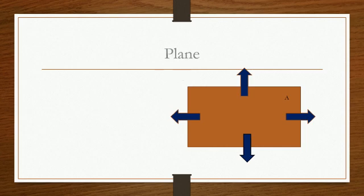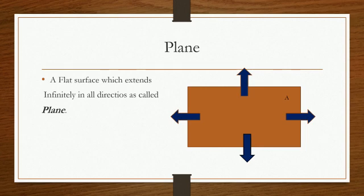Plane. A flat surface which extends infinitely in all directions is called plane. In the figure, arrows are drawn on all the sides to show that the plane extends infinitely in all directions.